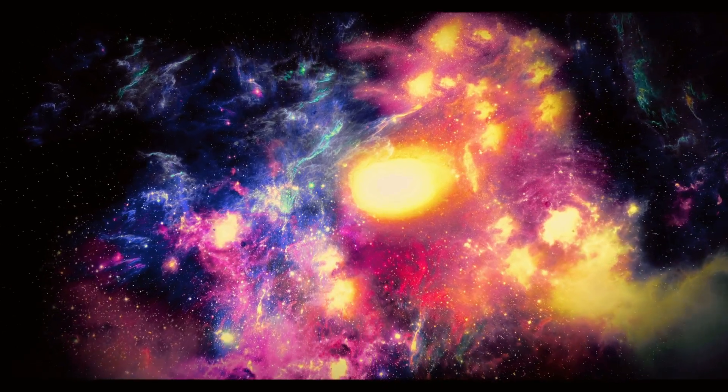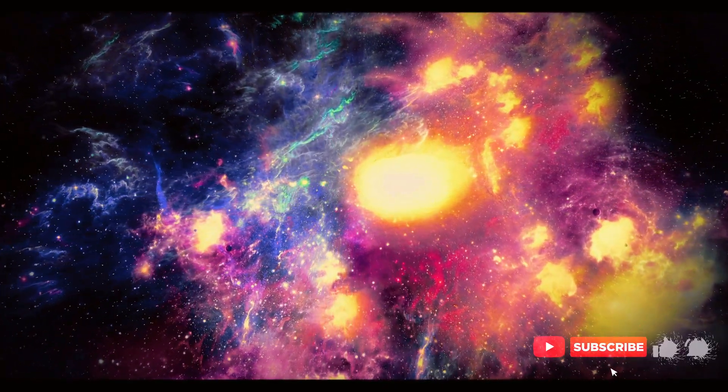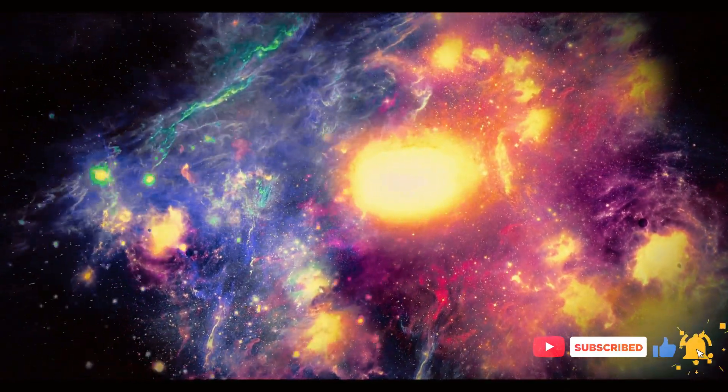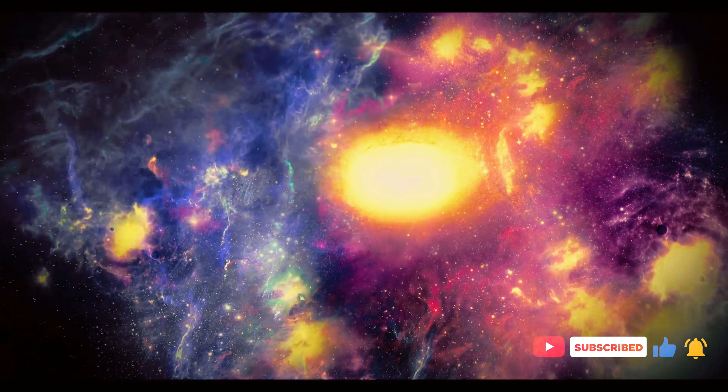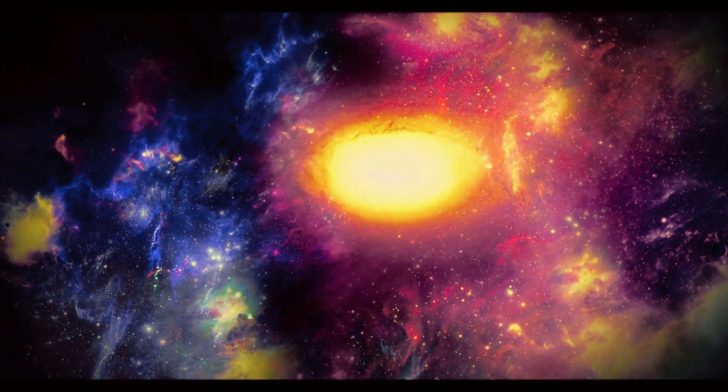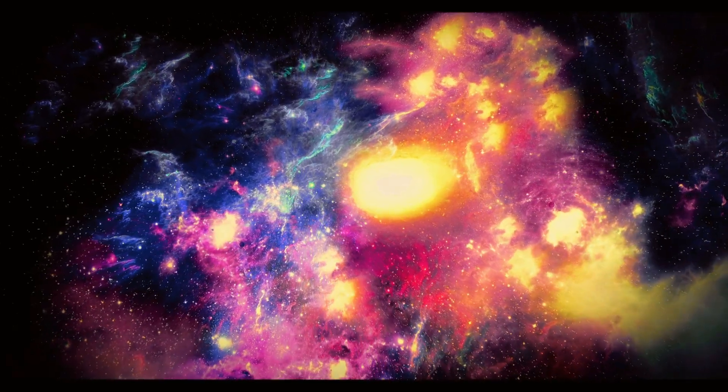There are also irregular galaxies, which, as the name suggests, do not have a regular shape or structure. These galaxies often have a chaotic appearance, with no distinct arms or bulges. They are thought to have been formed through interactions with other galaxies or by gravitational disturbances.